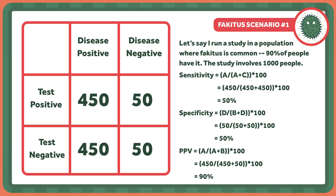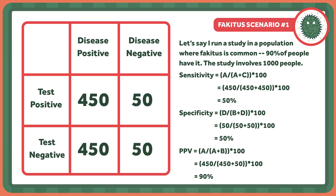Let's say I have a new test for fakeitis, our disease of choice here on Healthcare Triage. But in reality, my testing device is a coin flip — if it comes up heads, I tell you you're positive; if tails, you're negative. Let's say I run a study in a population where fakeitis is common, 90% of people have it, with 1,000 people. Since prevalence is 90%, 900 of the 1,000 have the disease and 100 do not. Since it's a coin flip, half of each group tests positive and half tests negative. Sensitivity is 450 over (450 plus 450) times 100, or 50%. Specificity is 50 over (50 plus 50) times 100, also 50%. Sensitivity and specificity have made it clear that this is a scam — they know the test sucks.